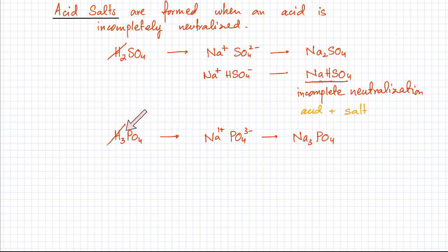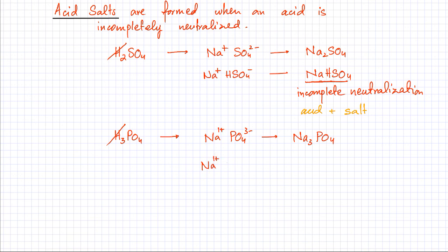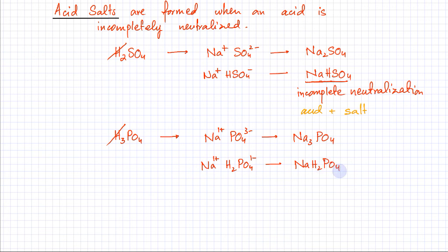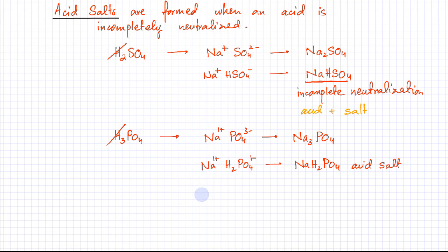Now I'm going to incompletely neutralize H₃PO₄, which means I'm not going to get rid of all three H⁺ ions. If I replace only one of the H⁺ ions, two H⁺ ions still remain in the formula, giving NaH₂PO₄. This is an acid salt because it is capable of producing H⁺ ions and it is also a product of neutralization.